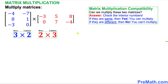Before we multiply these matrices, we are going to check matrix multiplication compatibility. The question is: can we multiply these two matrices? To check that, we focus on the interior numbers — the inside numbers, two and two. As long as these numbers are the same, we can multiply the matrices. If they are different, we cannot.